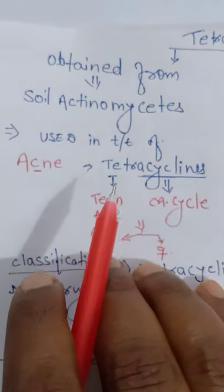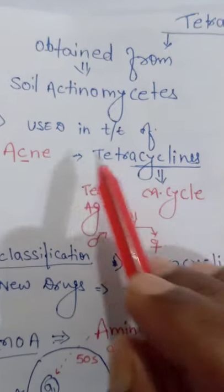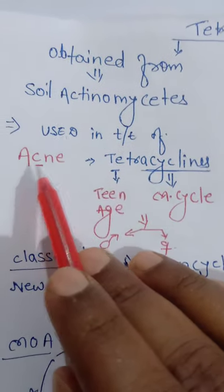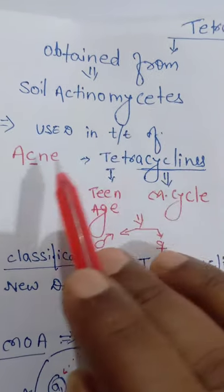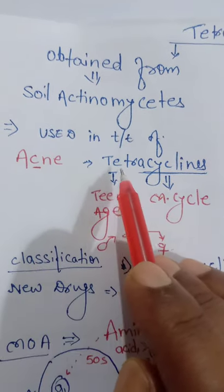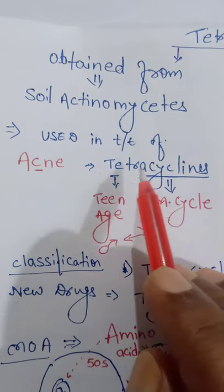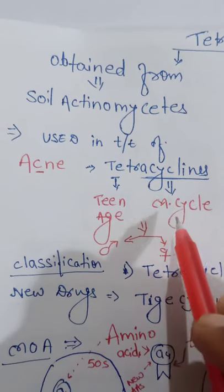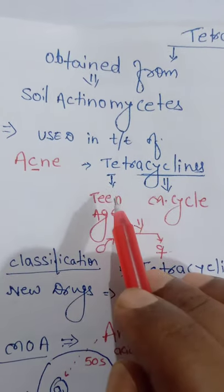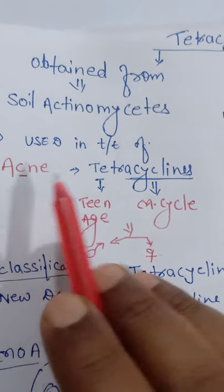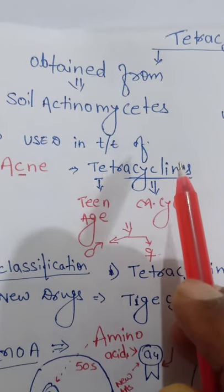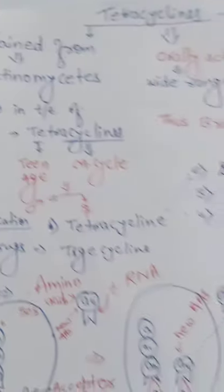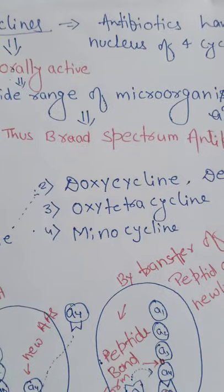To remember tetracycline: it is used in the treatment of acne. Acne occurs mostly in the teenage group. The mnemonic is: T for teen age group, and 'cycline' for cyclic period — when the menstrual cycle continues in the teenage group, pathogenesis of acne occurs, and the treatment is tetracycline.